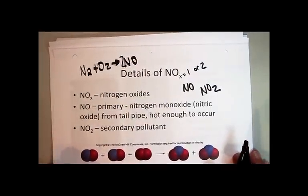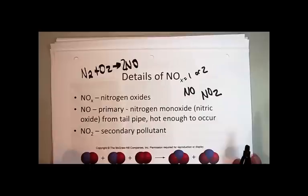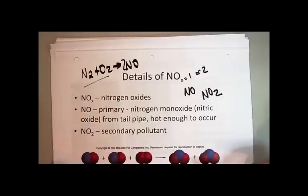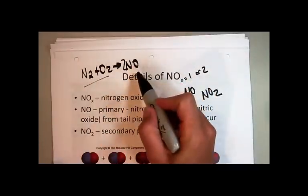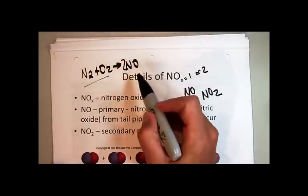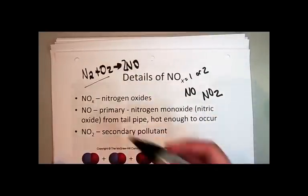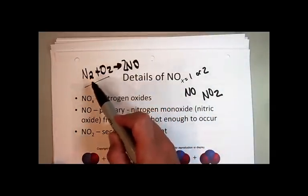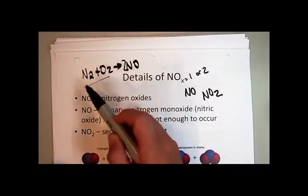So that's strange. If we live in an environment where most of our air is nitrogen and oxygen, and this is a chemical equation that can occur, why don't we live in an environment that's all nitric oxide? Well, the reason why is this reaction does not go very easily. It only goes when it's really, really hot, in the presence of a lot of heat.